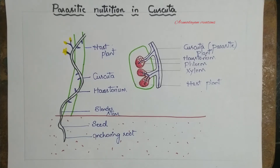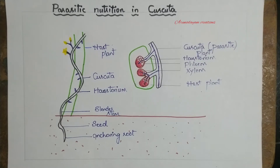Plants are generally photosynthetic in nature and carry out autotrophic nutrition. But in the case of Cuscuta plants, why don't they have autotrophic nutrition? These are a set of plants which do not have photosynthetic pigments in them. So they cannot prepare their own food.